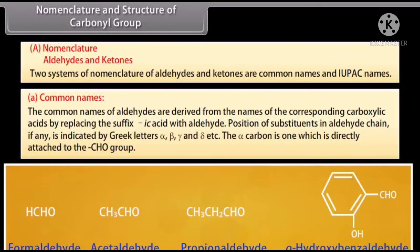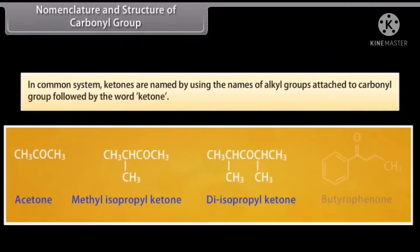The alpha carbon is the one which is directly attached to the aldehydic group. In the common system, ketones are named by using the names of the alkyl groups attached to the carbonyl group, followed by the word 'ketone'.